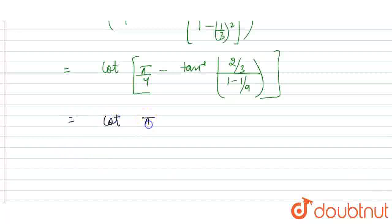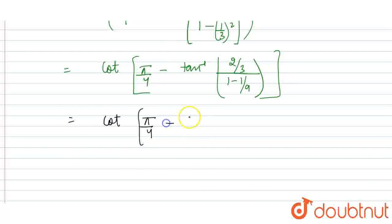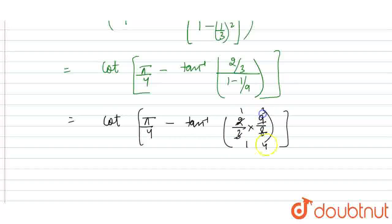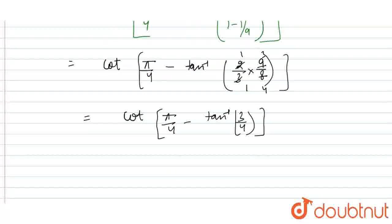Now, solving it further, we will get cot 5/4 minus tan inverse. This is 2/3 in division with 9 minus 1, 8. So, 8/9. So, now, we have 2 times 1 is 2, 2 times 4 is 8, 3 times 1 is 3, 3 times 3 is 9. So, tan inverse 3/4. That equals cot 5/4 minus tan inverse 3/4. This is what we are going to get.